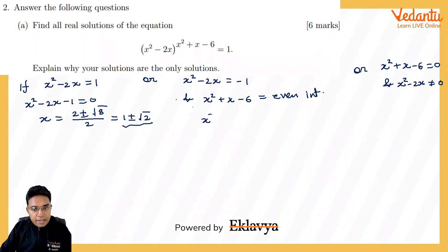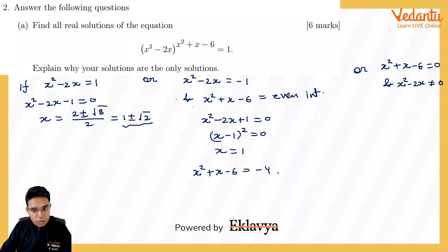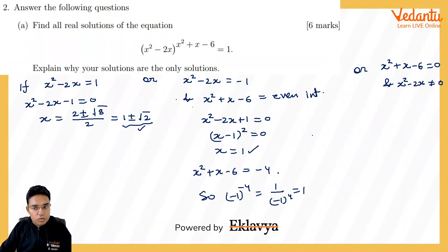For the second scenario, x²-2x = -1 means x²-2x+1 = 0, which is a perfect square (x-1)², giving x = 1 as the only value. At x = 1, the power x²+x-6 = 1+1-6 = -4. Since the power is -4 (an even integer) and the base is -1, we get (-1)^(-4) = 1/(-1)⁴ = 1. So x = 1 is also a valid solution.